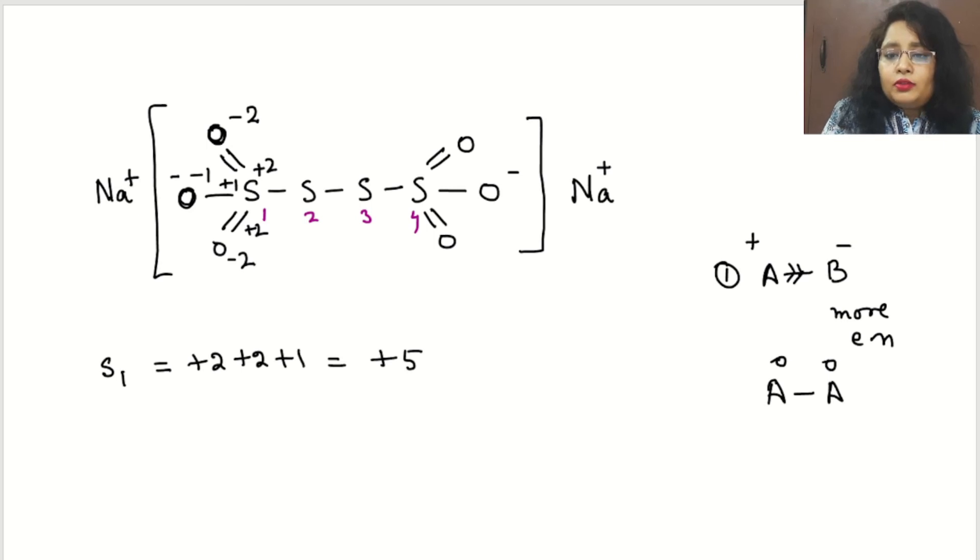Now come to the bond between sulfur number 1 and sulfur number 2. Both are same, so the electronegativity will be 0 and 0. Here again on 3 that will be 0, and on 4 from sulfur-sulfur bond there will be 0. From this -2 and +2, again -2 +2, here -1 and +1.